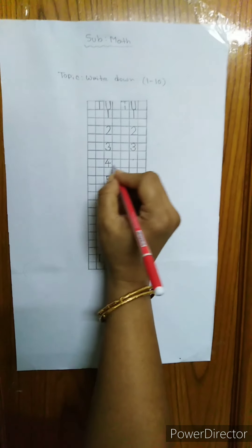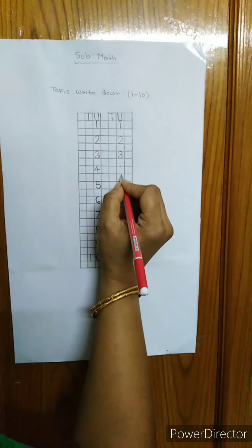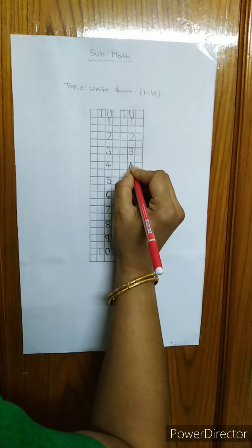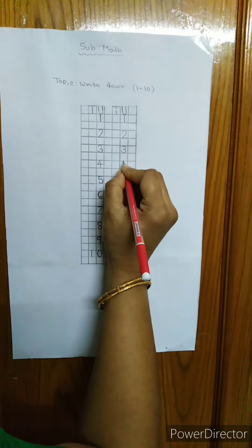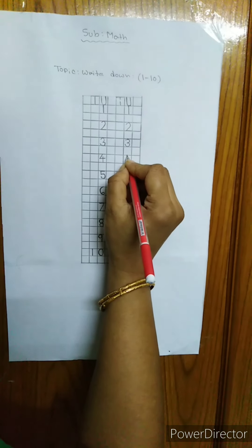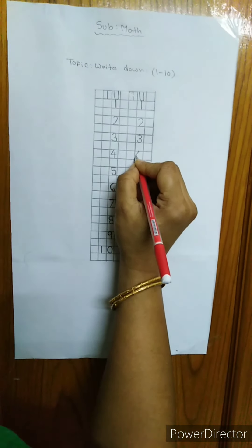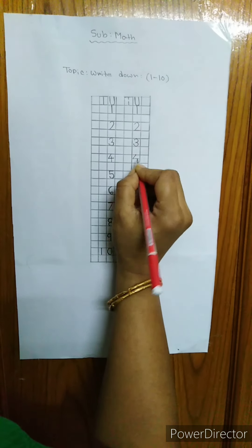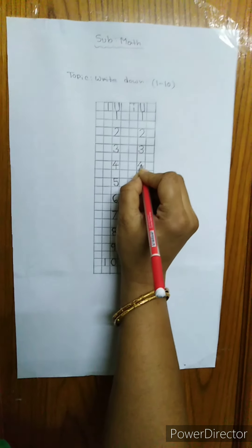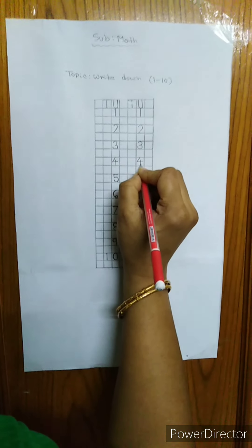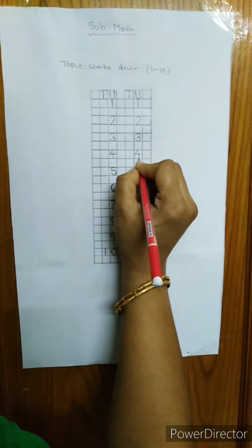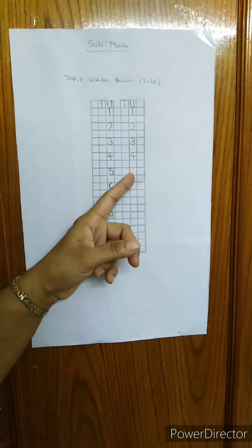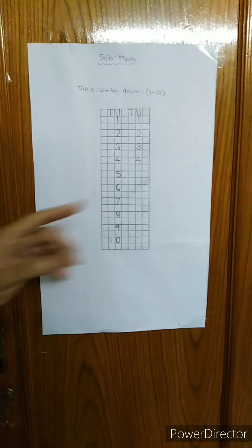Now, the next number is 4. At first, I will touch the point. I will draw a sliding line and a small sleeping line, and a small straight line at the middle point here to here, and touch the down line. This is 4.